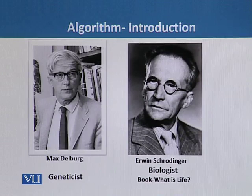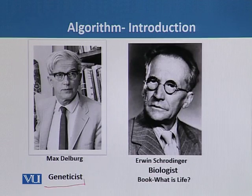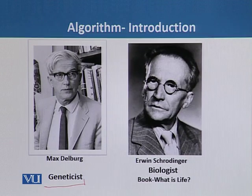Two influential scientists are credited with crossing the barrier between physics and biology: Max Delbrück and Erwin Schrödinger. Both were trained as physicists. Delbrück, trained as an atomic physicist by Niels Bohr, quickly became an expert in genetics. By 1945, he was already teaching genetics to other biologists — a physicist who had transformed himself into a geneticist, which is a remarkable phenomenon.